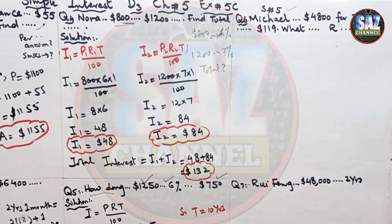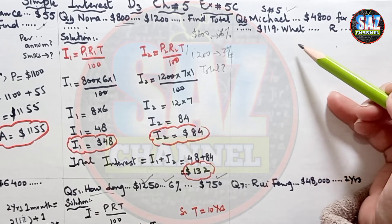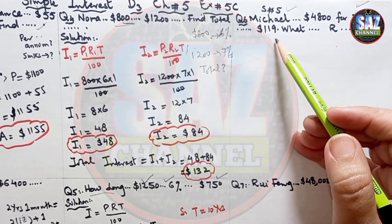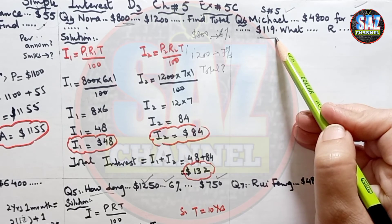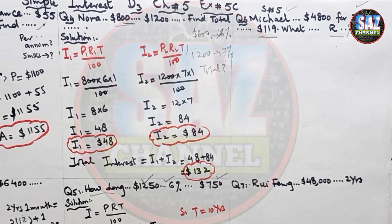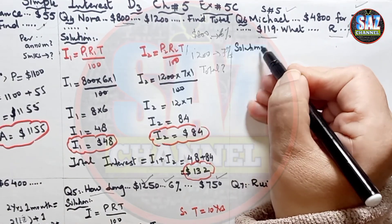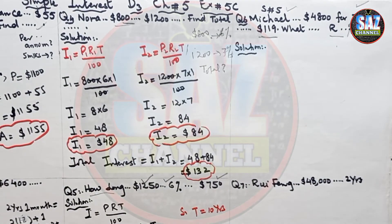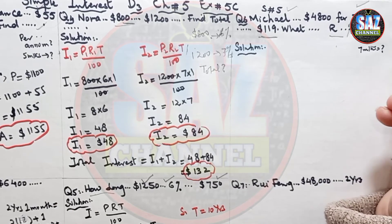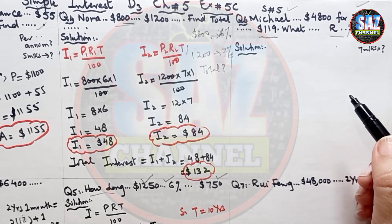Question number 6: Michael lent Farhan $4,800 for 7 months. At the end of this period, Farhan had to pay Michael an interest of $119. What was the simple interest rate per annum? We have to find the simple interest rate. $4,800 is the principal amount, given for 7 months. Since the interest rate is required per annum, the 7 months must be converted to years.